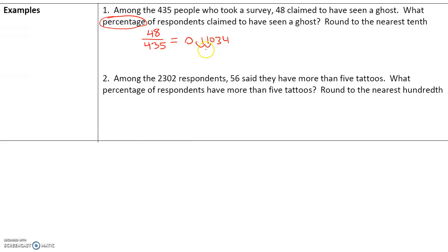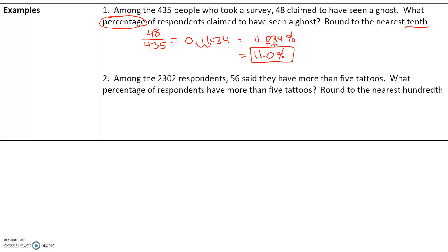Moving the decimal point to the right twice, or multiplying by 100, gives us 11.034%. The question says to round to the nearest tenth, meaning one decimal place. We have 11.0 — since the digit after the tenth place is 4 or lower, the zero remains the same, giving us 11.0%. Please do number two by yourself and we will go over it in class.